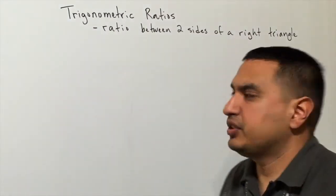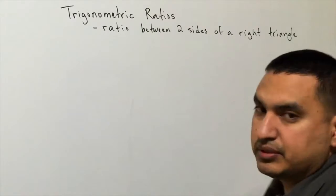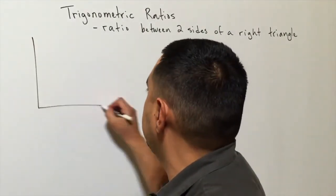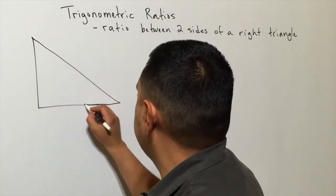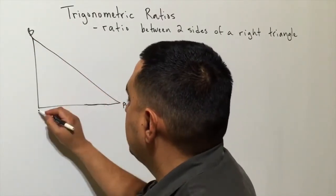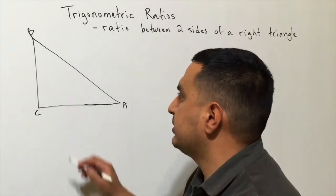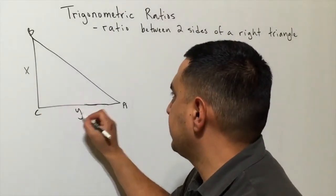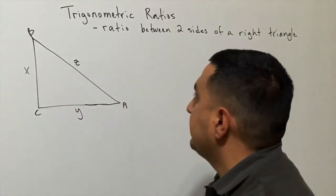Today we continue to talk about trig ratios — the ratio between two sides of a right triangle. Let's draw a triangle and call it triangle ABC. We'll give it some lengths: this side has length x, this one has length y, and this one has length z.